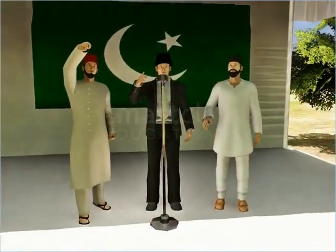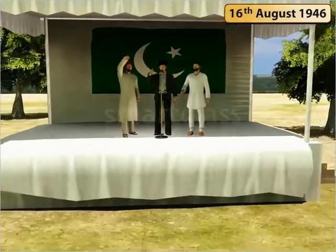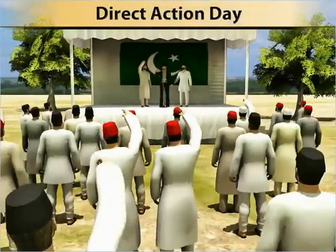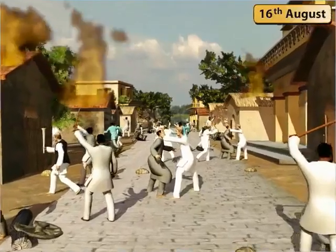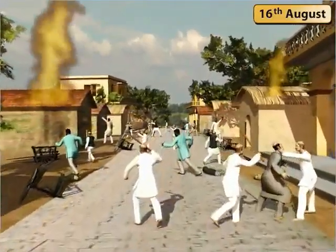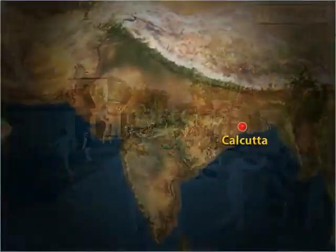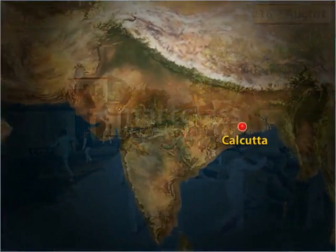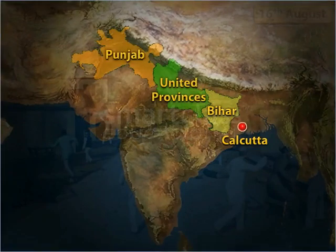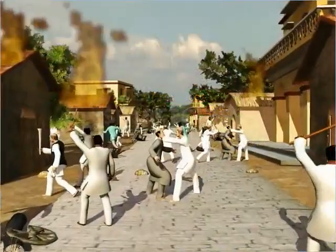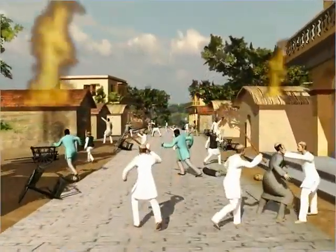Subsequently, Jinnah announced 16th August 1946 as Direct Action Day to press the demand of Pakistan. When 16th August arrived, bloody riots broke out in Calcutta, which spread to rural Bengal and then to Bihar. After that the riots spread across the United Provinces and Punjab. Both the Hindus and the Muslims suffered heavy casualties.